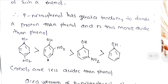P-nitrophenol or paranitrophenol has a greater tendency to donate a proton than phenol and is thus more acidic. The electron withdrawing NO2 group stabilizes the phenoxide ion, which is why nitrophenol is more acidic than phenol.